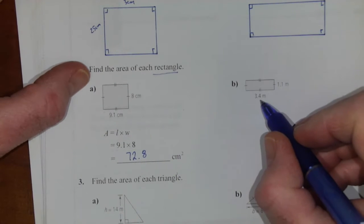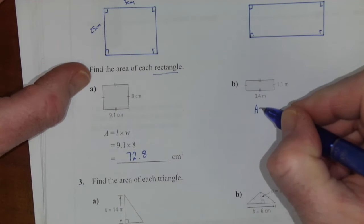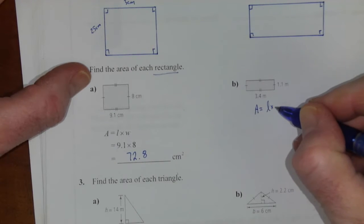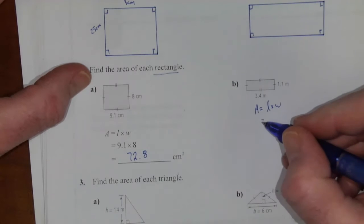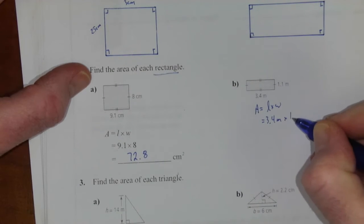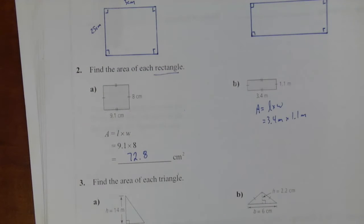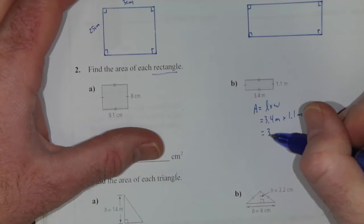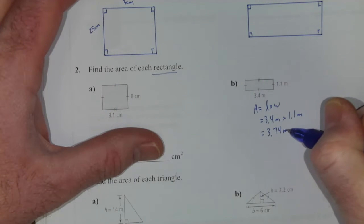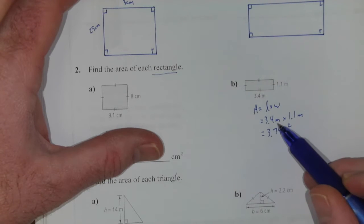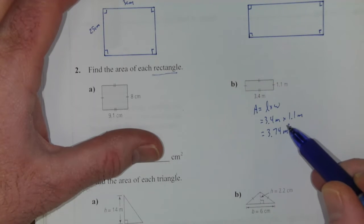Next up we've got 3.4 meters by 1.1 meters. Start with our formula. Length times width gives you area. So in this case that's 3.4 meters times 1.1 meters. And when you do that 3.4 times 1.1 gives you 3.74 meters squared. And again this is meters times meters which is why it becomes meters squared.